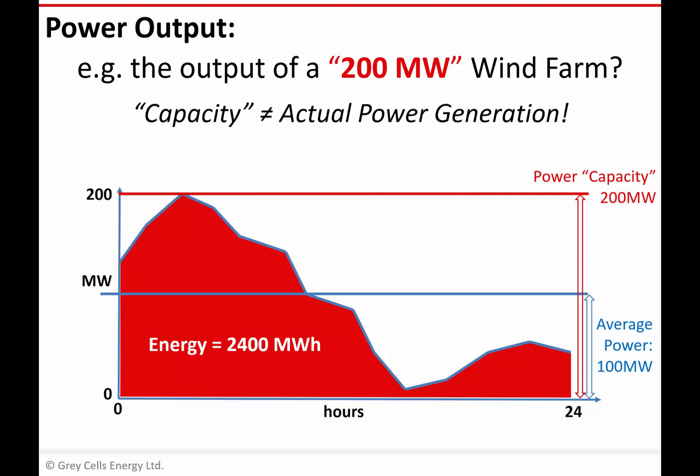An obvious point then: the capacity of our wind farm is not telling us anything about the actual power it generates at any point in time, because that varies on a continuous basis. And if it's not telling us about the variation in power generation, it's also not telling us anything about the amount of energy that facility is going to generate over a period of time.